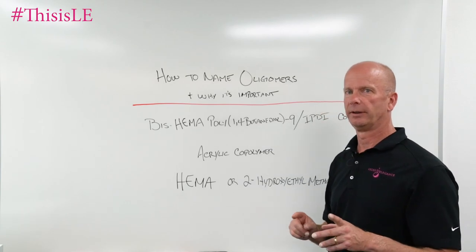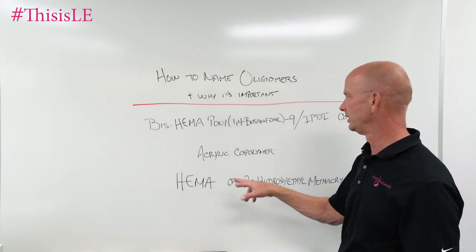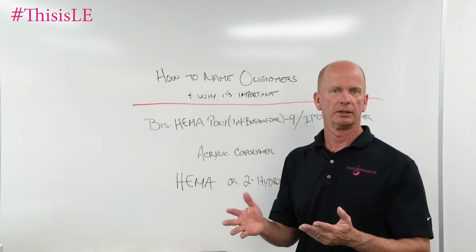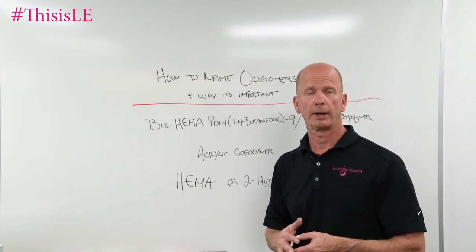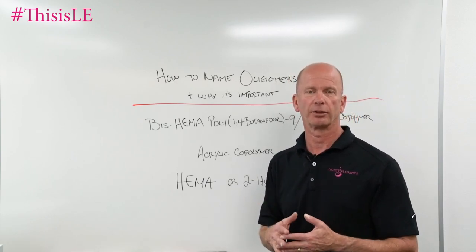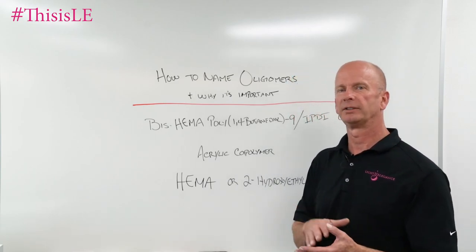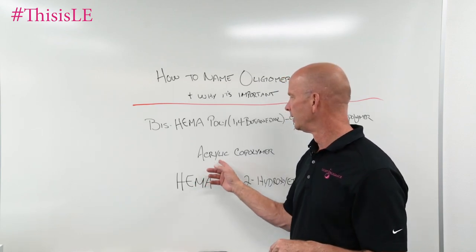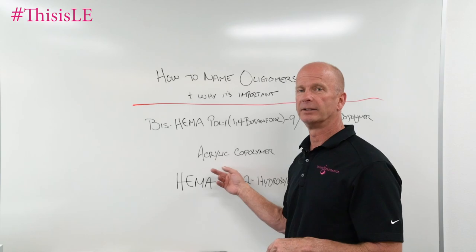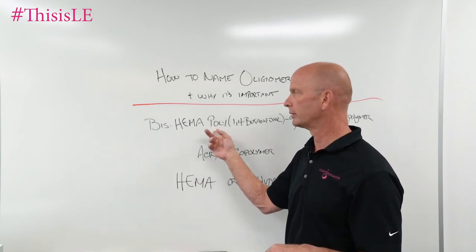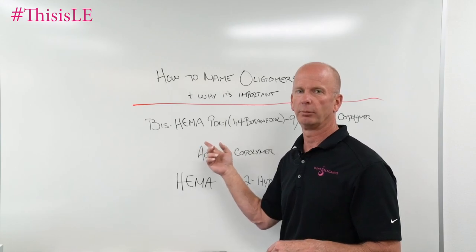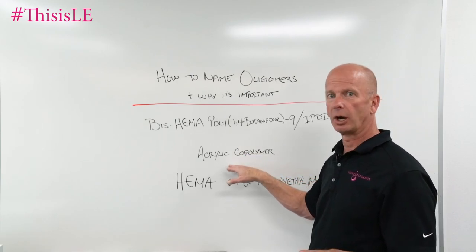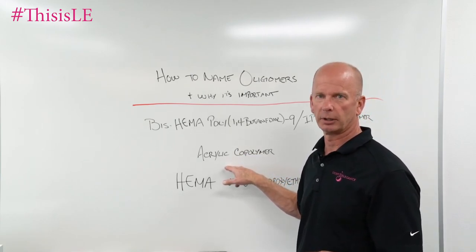That is completely different than some of the ingredients you might see that just list acrylic copolymer. An acrylic copolymer would be something akin to your acrylic powder. Your acrylic powder is going to be polymerized ethyl methacrylate. You can polymerize ethyl methacrylate, methyl methacrylate, or other methacrylates to make an acrylic copolymer. That is actually a polymer — it's not a liquid component like the bis-HEMA-1,4-butanediol-9-IPDI copolymer.